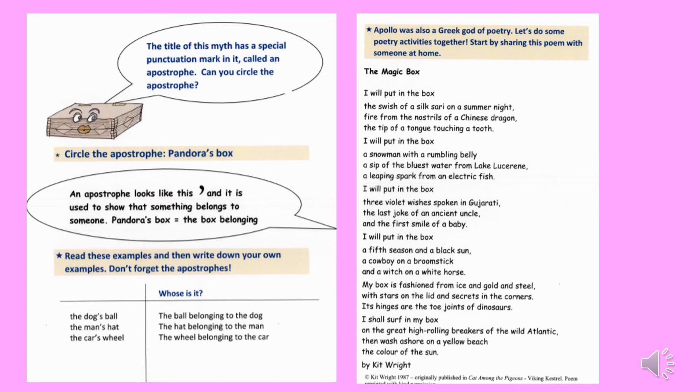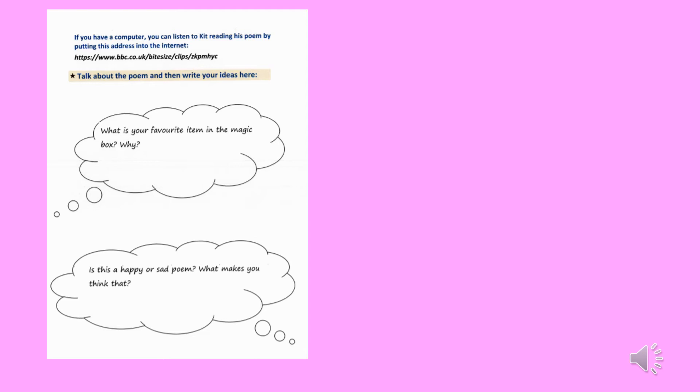On the next page, you've got a poem. Please share this poem with someone at home — read it out loud to somebody. At the bottom of the poem, the author's name is Kit. You can follow the link shown on the screen or in your booklet to listen to Kit reading the poem out loud. Once you've spoken about the poem with somebody at home and read it to them, maybe ask them some questions and discuss certain words. There are some thought bubbles in your booklet — have a little think about what the favourite item in the magic box is, and whether it's a happy or a sad poem and what makes you think that. Write your thoughts down in the thought bubbles.